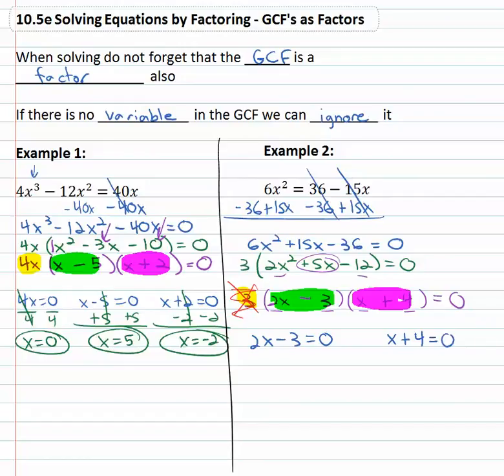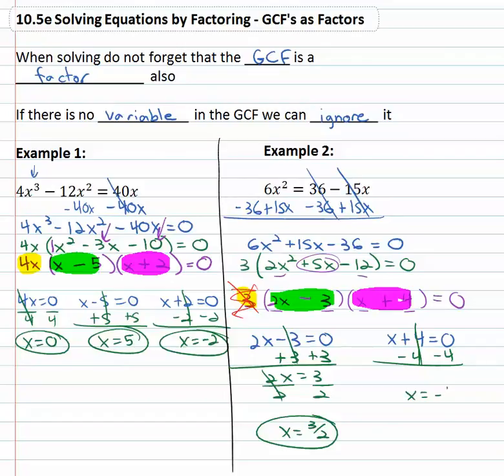And we can solve each of those. Solving the first one by adding three, 2x = 3, dividing by two and x = 3/2. Solving the second one by subtracting four and x = -4.